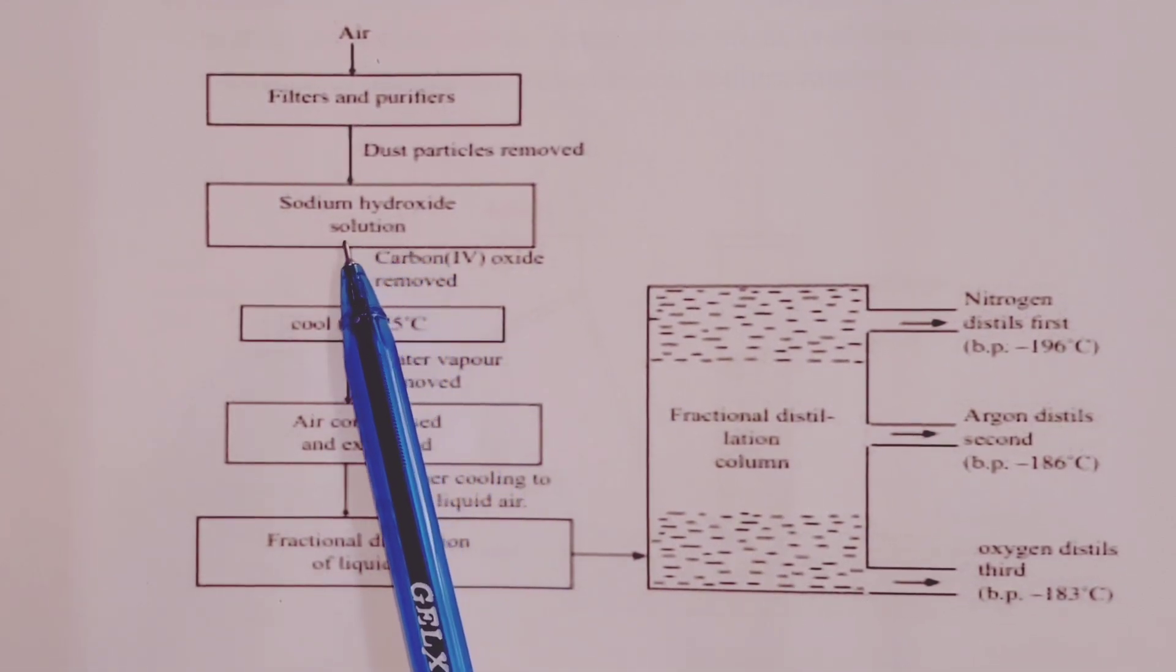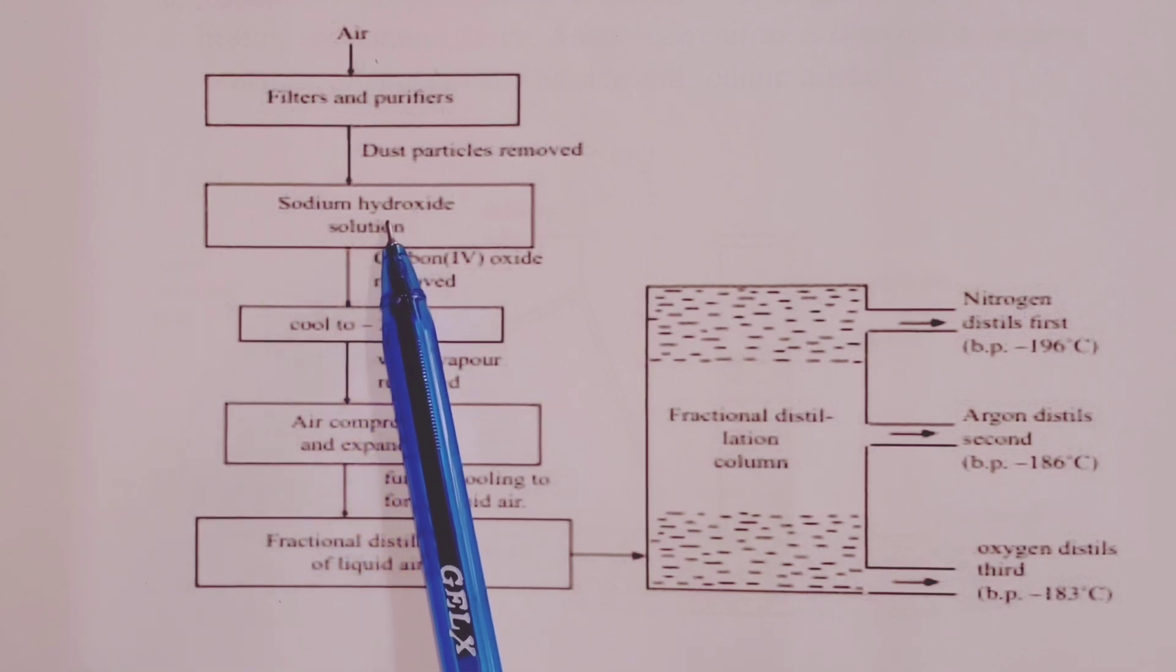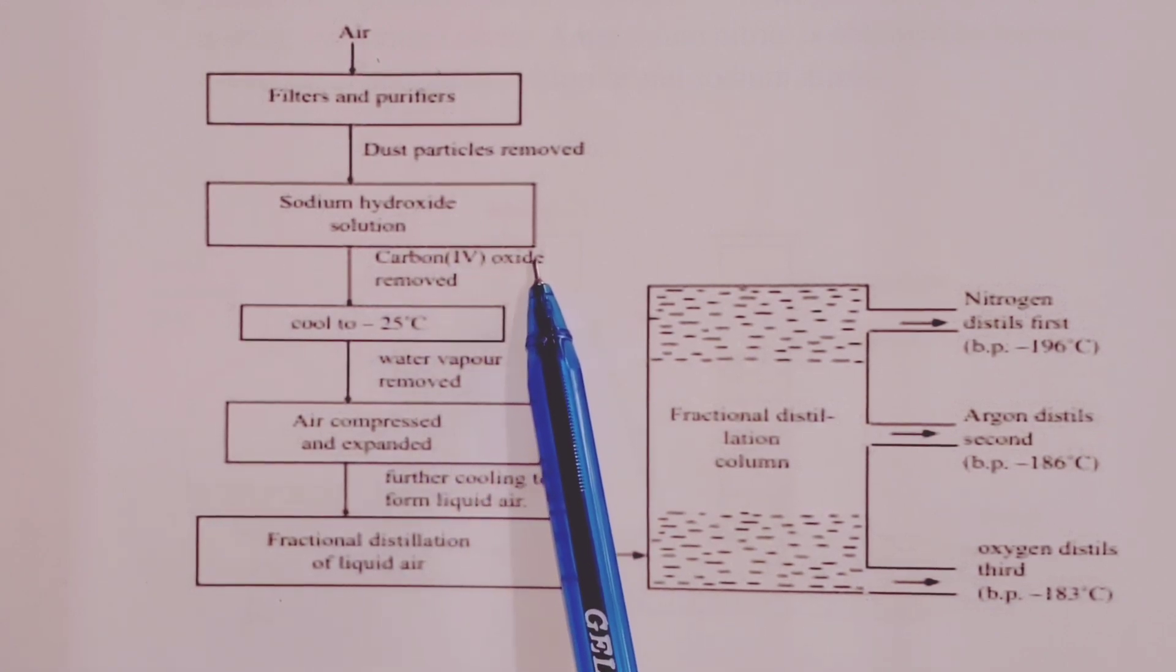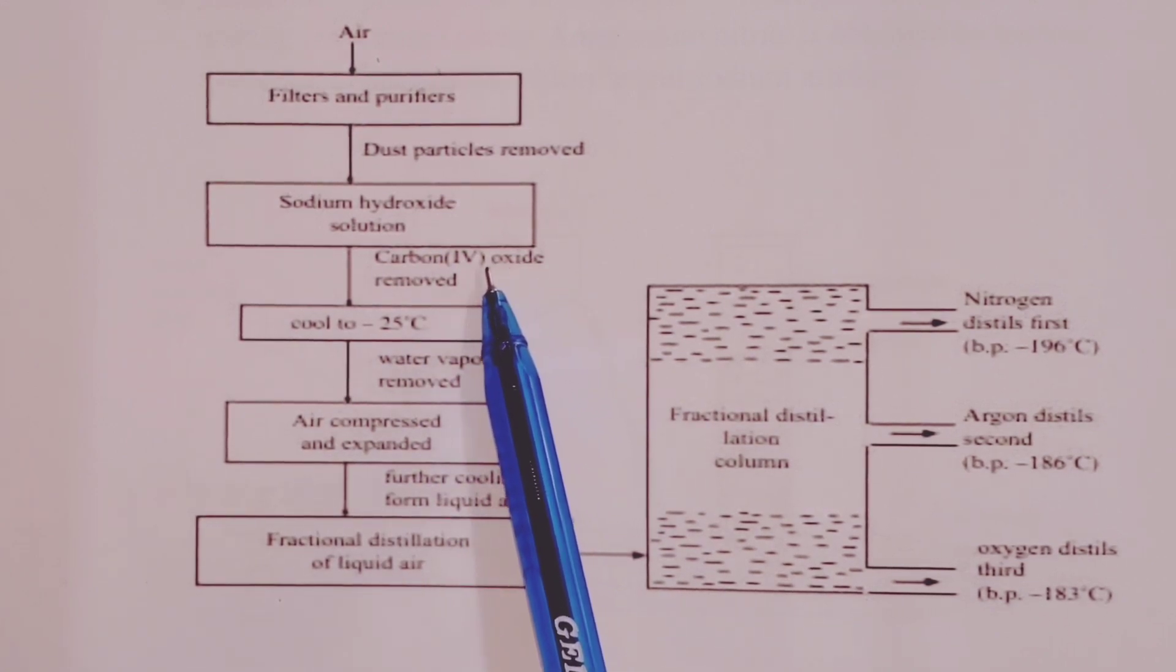From there, we shall pass air through a strong alkali. Here, we are using sodium hydroxide solution so as to remove carbon (IV) oxide. Once that has been done,